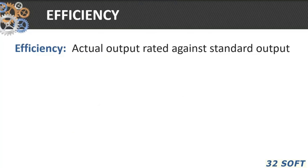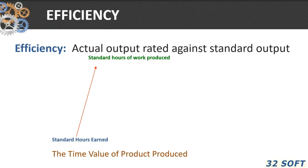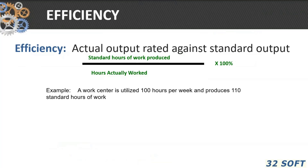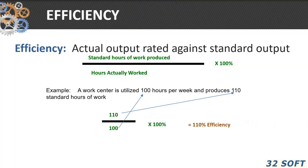Let's talk about efficiency. Efficiency is the actual output rated against standard output — standard hours produced, that's actual hours earned as you process work. It's the value of time produced divided by the hours actually worked, times 100, which equals the efficiency. For example, if a work order is usually 100 hours per week and produces 110 hours, then the efficiency is 110 divided by 100, which equals 110 percent efficiency.